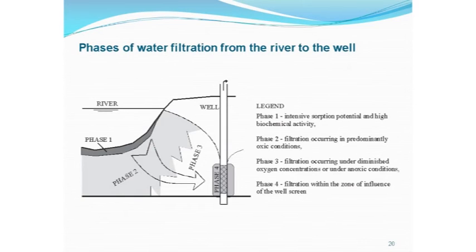In my opinion, there are four phases of flow from the river toward the well. The first phase is intensive source of potential and high biochemical activity, oxic state. The second phase is also oxic state but a little bit less — filtration occurring predominantly under oxic conditions. Third, filtration occurring under diminished oxygen concentration or under anoxic conditions. Phase four is filtration within the zone of influence of the well screen with different processes of clogging, etc.